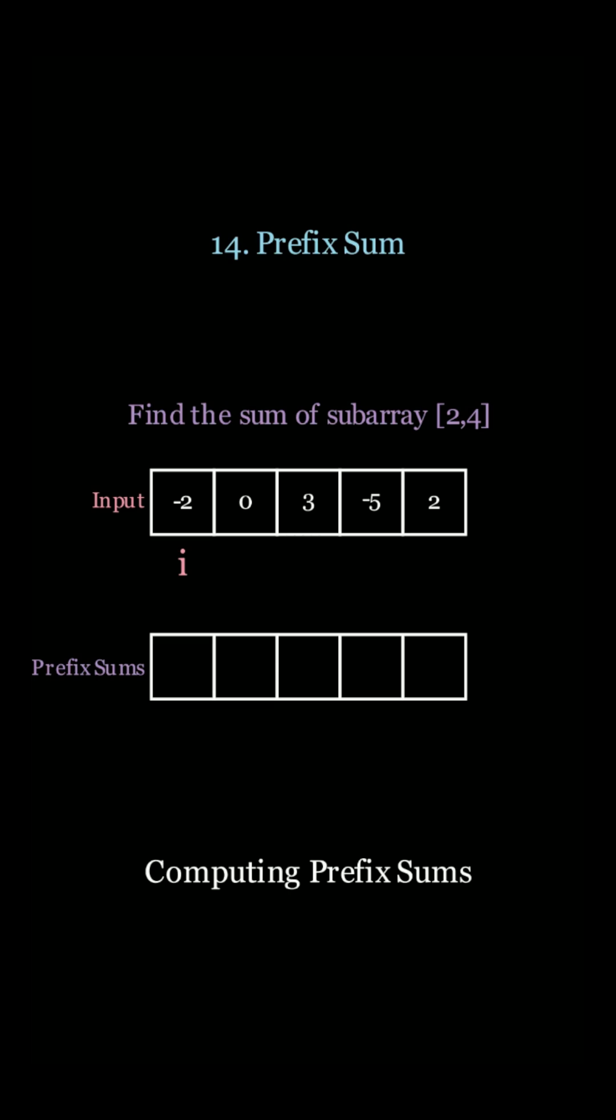So we're going to calculate a prefix sum array by just taking the cumulative sum from 0 all the way up until that index so that we keep track of all the cumulative sums. And then finally we're going to use it in our result.